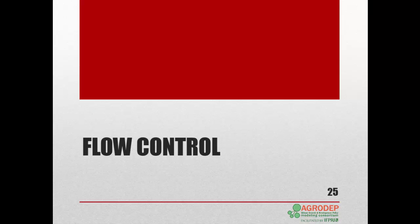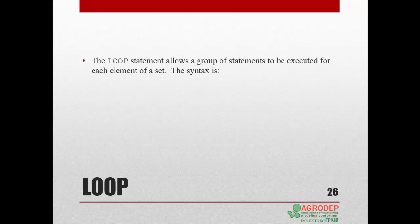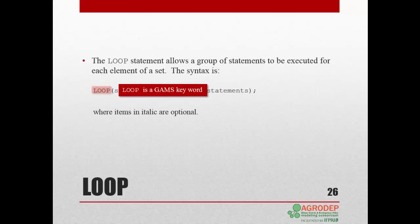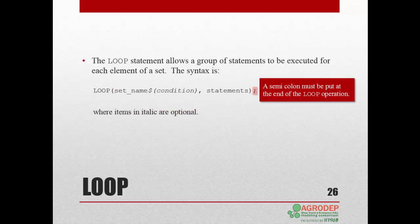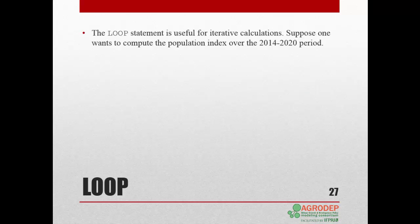We now present tools to control programming flows. We start with the loop and if statements. The loop statement can be used to execute a group of statements for each element of a set. The syntax is as follows: loop is a GAMS keyword. Like other index operations, the loop statement is enclosed within parentheses or brackets. A semicolon ends the loop statement. Items in italics are optional. The loop statement can also be used for iterative calculations.